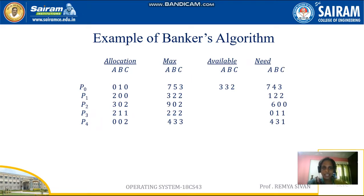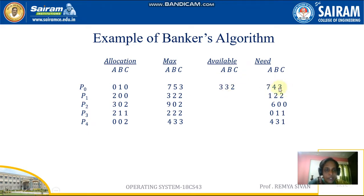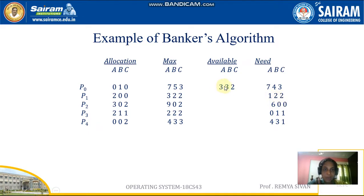We have processes P0 through P4. P0 requires 7A, 4B, 3C — we don't have that; we have only 3A, 3B, 2C. Read each digit individually: 7A, 4B, 3C is what P0 needs to complete. We don't have it. P1 requires 1A, 2B, 2C. We have 3A, 3B, 2C, so we can satisfy P1's need.